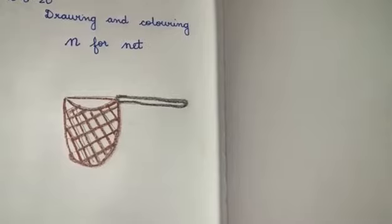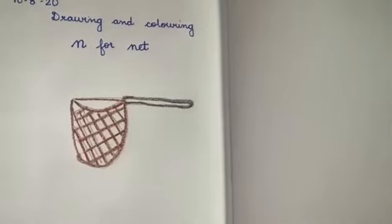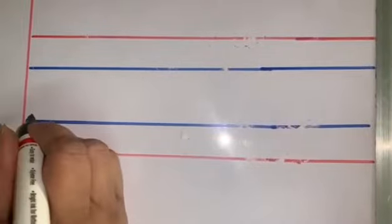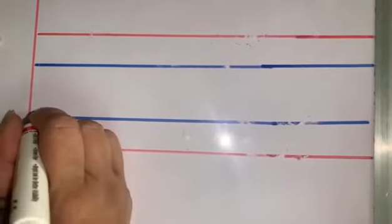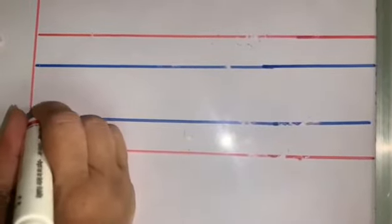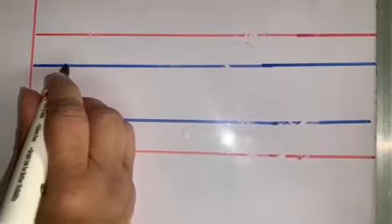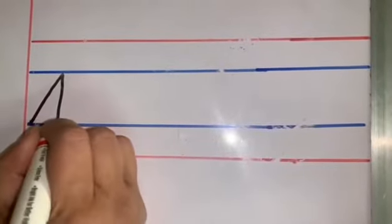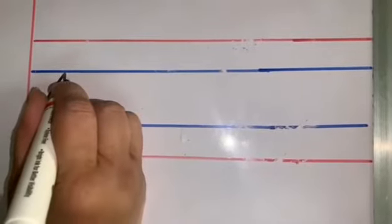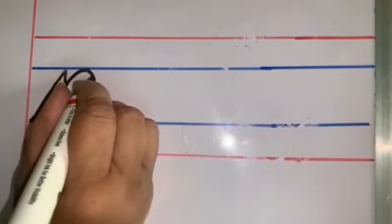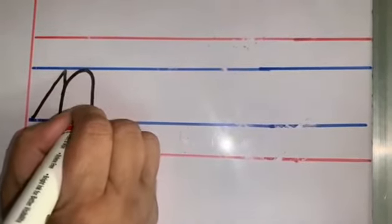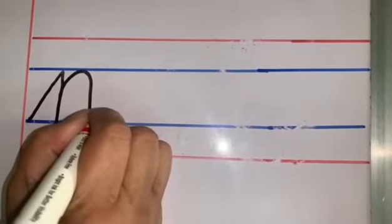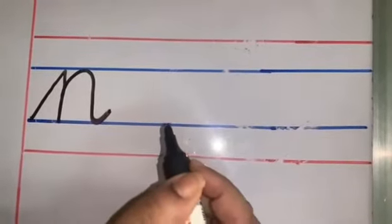Now let us learn to write letter N. From the second blue line, you go slant to the first blue line. You come down to the second blue line. You go up again on the same line. You make a curve, come down to the second blue line, and a curved tail.